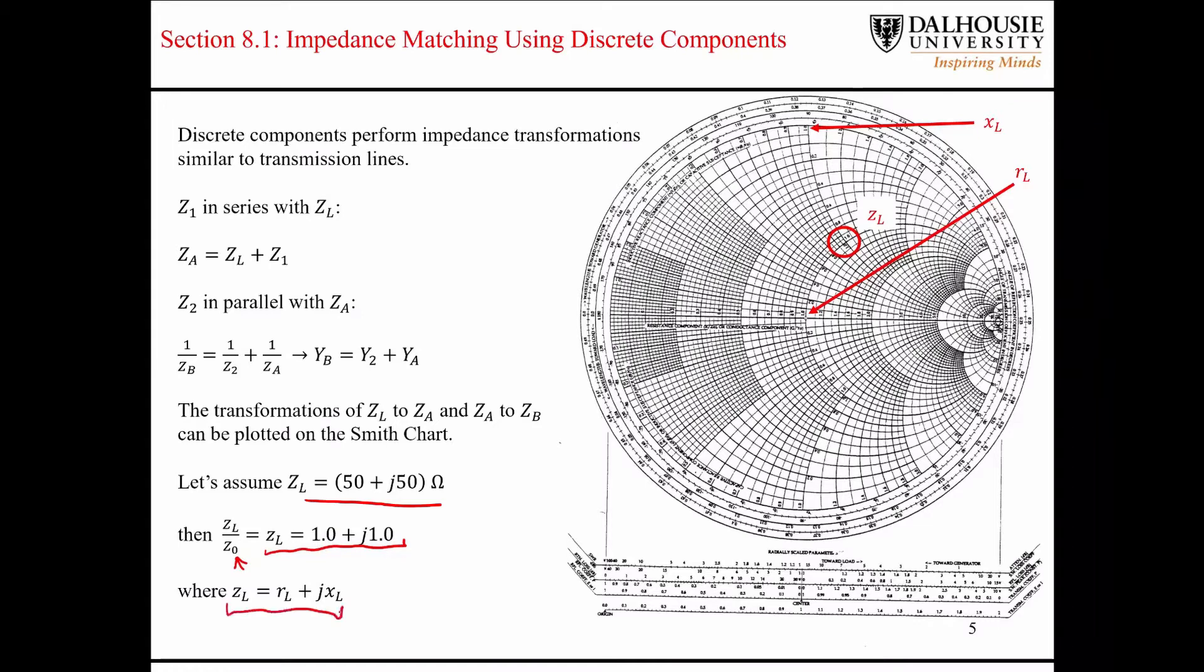And I'm using lowercase letters to represent the normalized impedances throughout all these examples. So in this case, we look for the intersection of the constant resistance circle corresponding to 1.0, which would be this, and the constant reactant circle corresponding to 1.0, which would be this guy here.